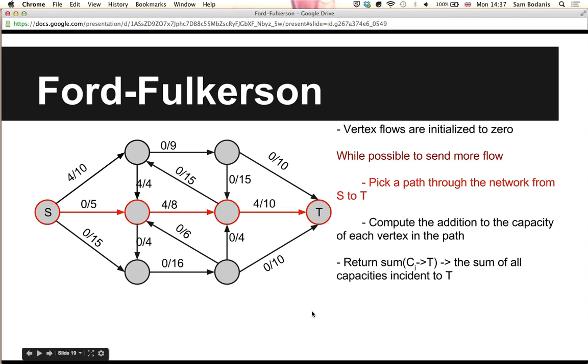So we pick another path through the network from S to T. Now we write down this new path, and then we need to determine what is the amount of flow we can pass through it. The minimal capacity pipe is this one that can accept 5.